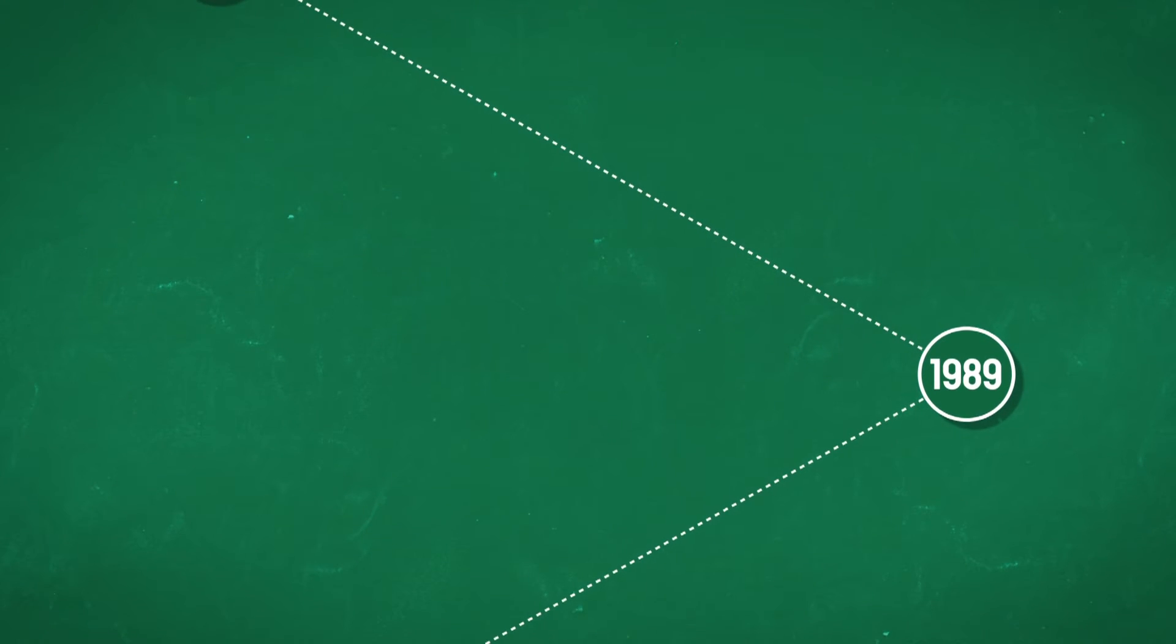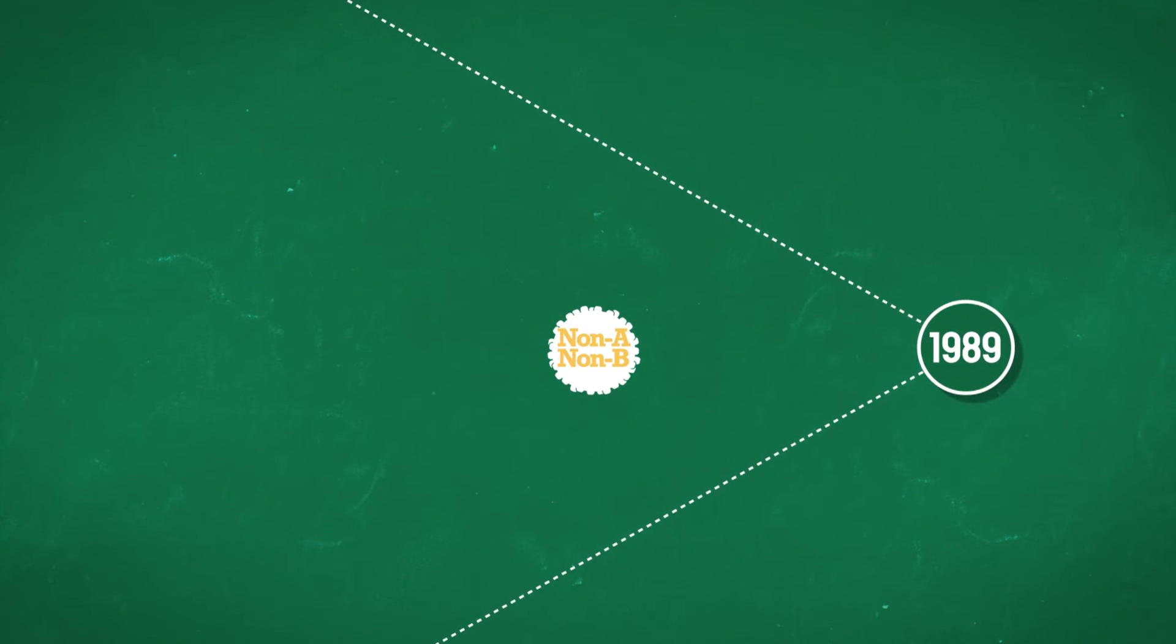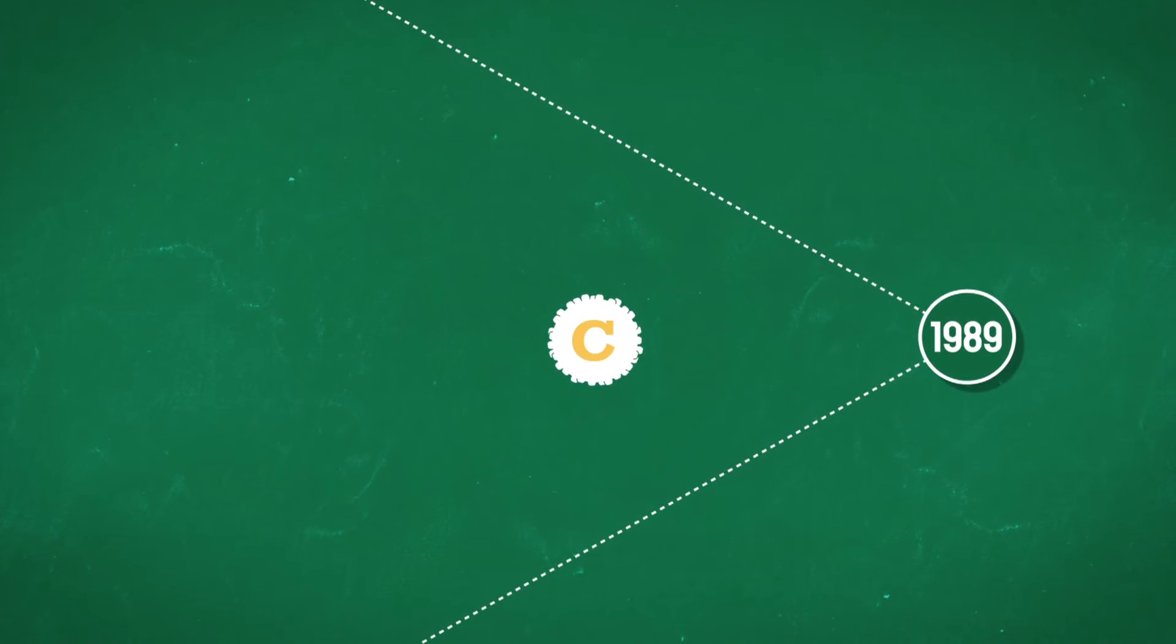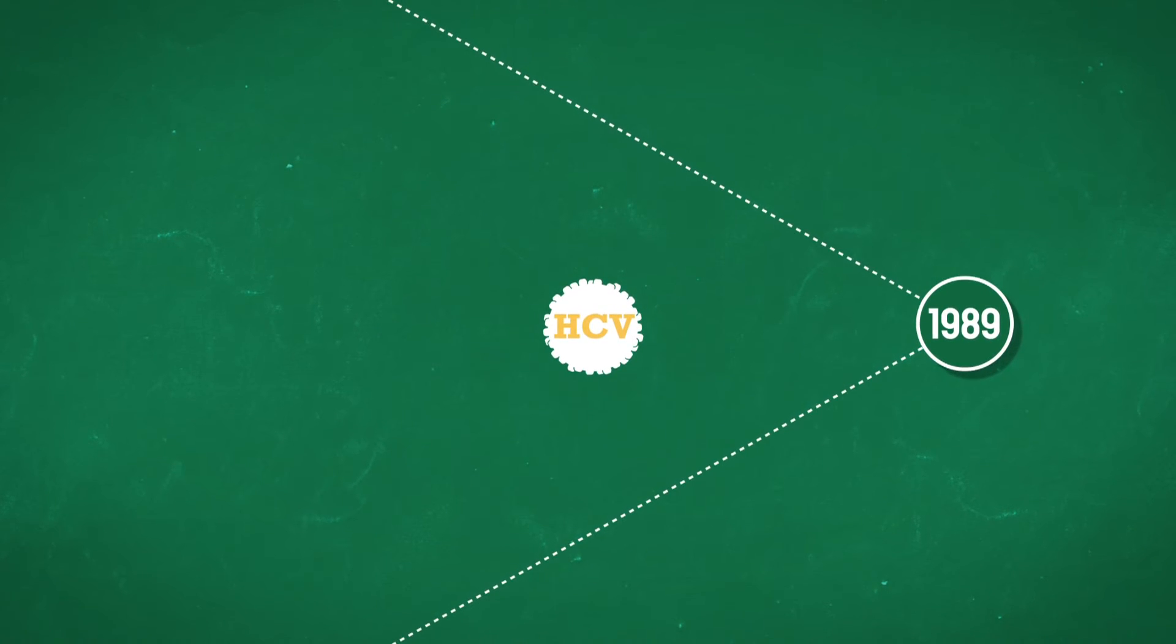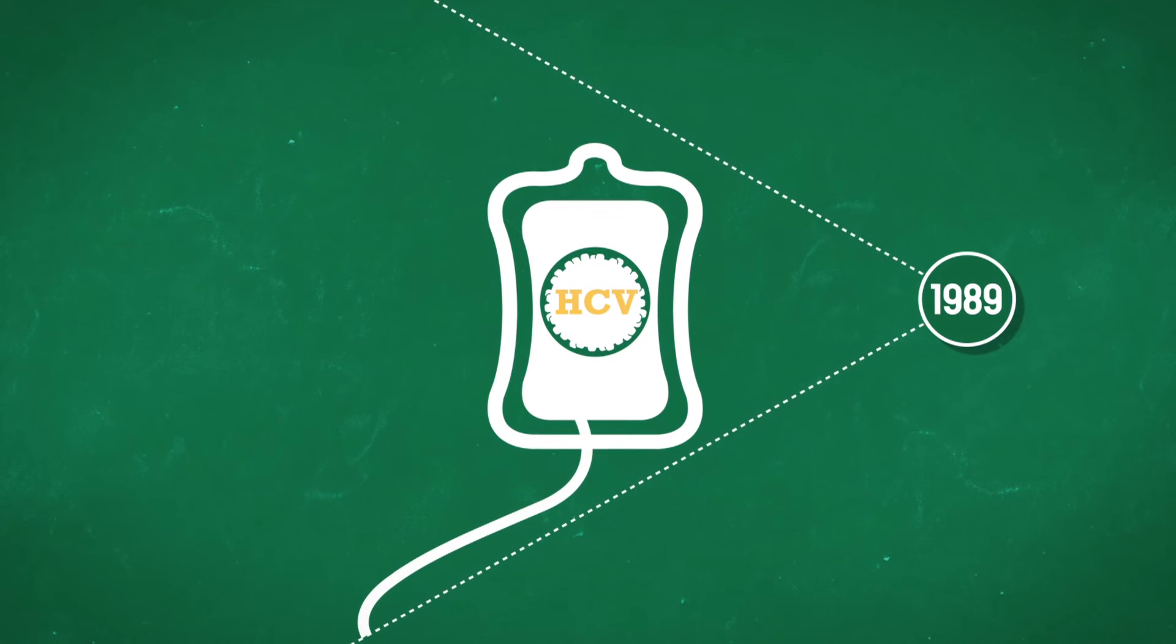In April 1989, non-A, non-B was identified and became known as hepatitis C virus, or HCV. It was known to travel via the bloodstream and therefore could be transmitted by blood transfusion.